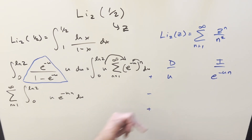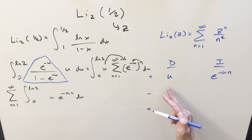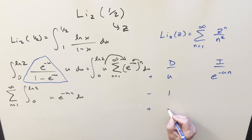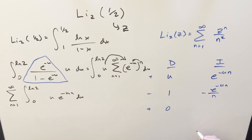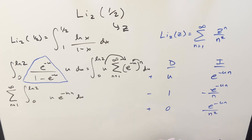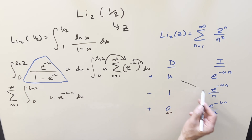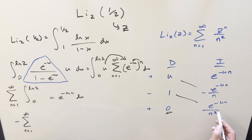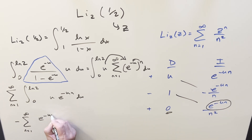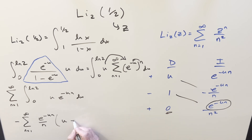For the DI method, I want to differentiate u because that will differentiate to zero. Differentiating u gives 1, then 0. Integrating e^(−un): since n is a constant, we get −(1/n)e^(−un). Doing it again gives +(1/n²)e^(−un). The last row has a zero, so that zeros out the integral. We just evaluate the diagonals. Both have a minus sign, so I'll factor out a minus in front of the sum. Then factoring out e^(−un)/n, the expression inside becomes u + 1/n, evaluated from 0 to ln 2.